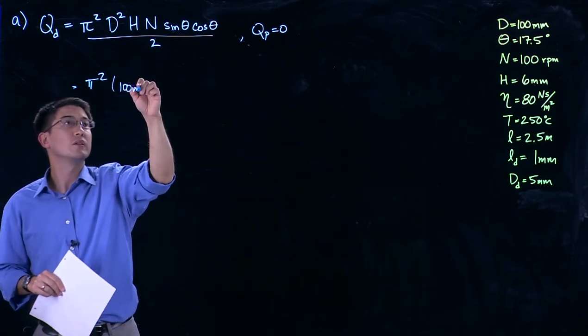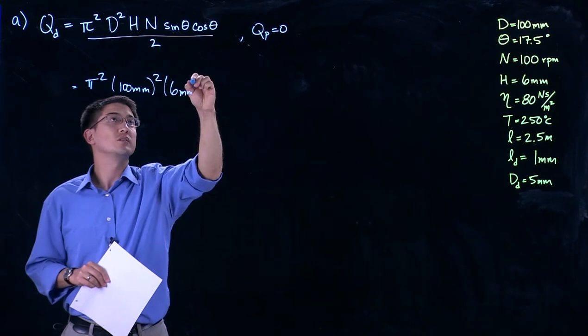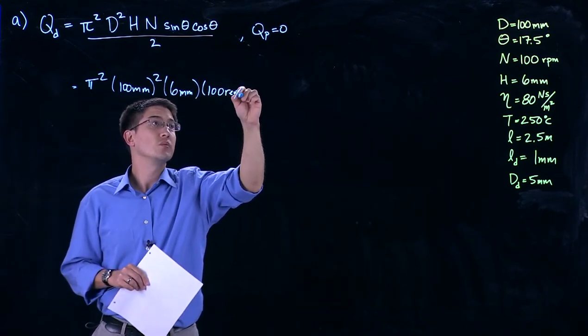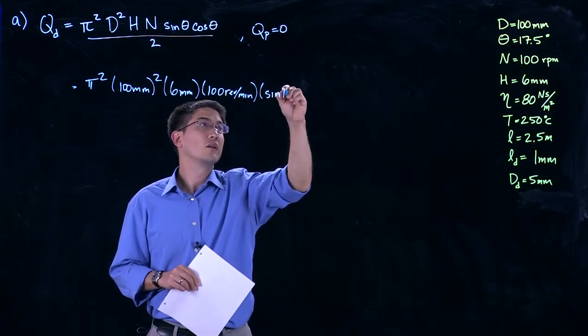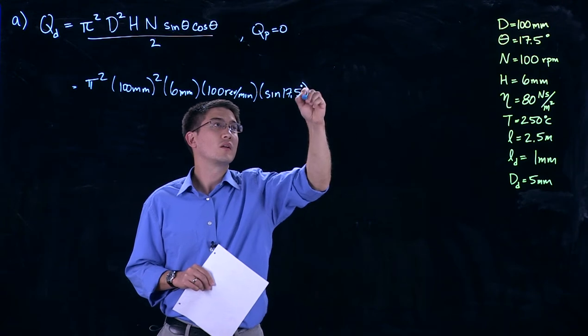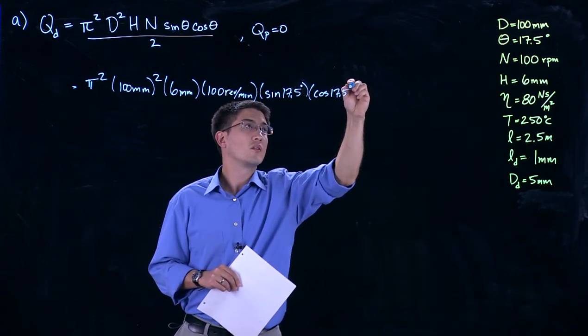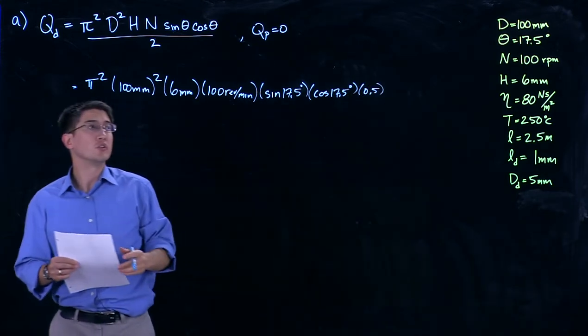100 millimeters. This is 6 millimeters. This is 100 revolutions per minute. All over 2.